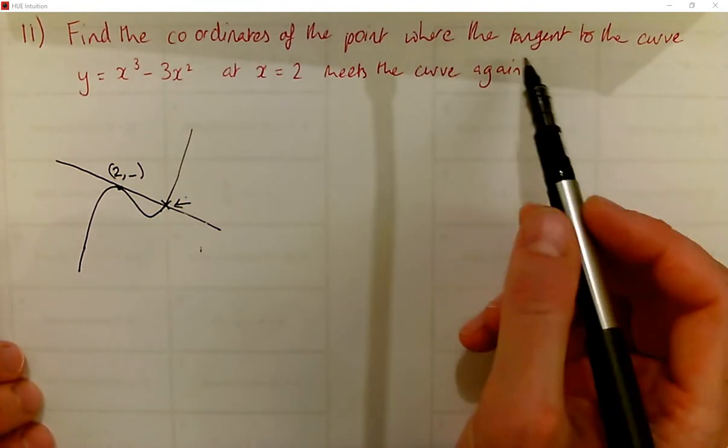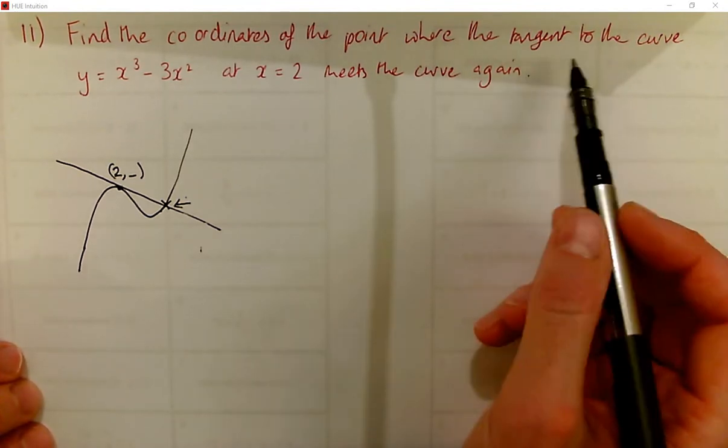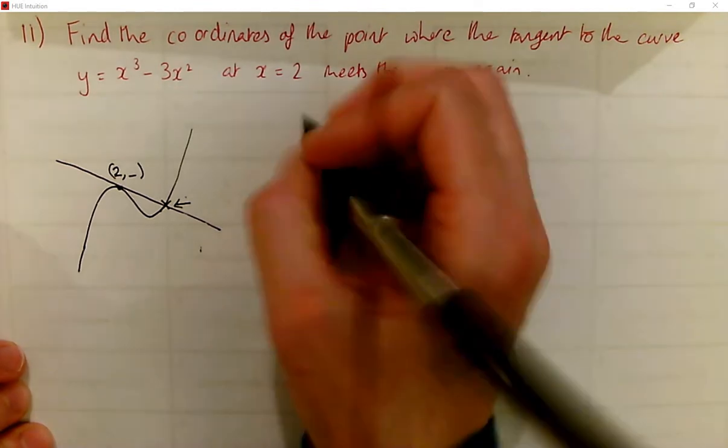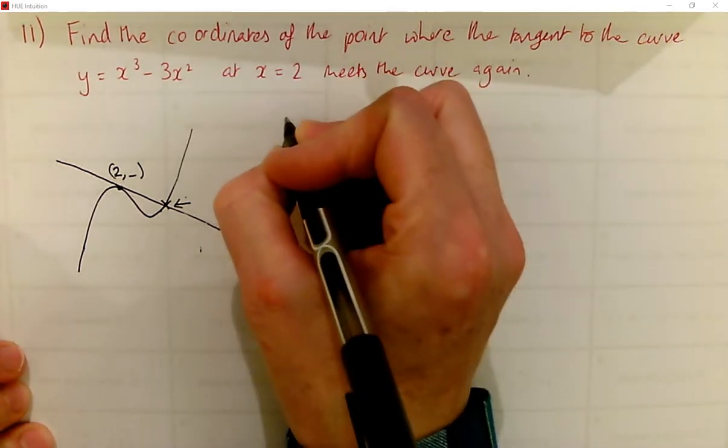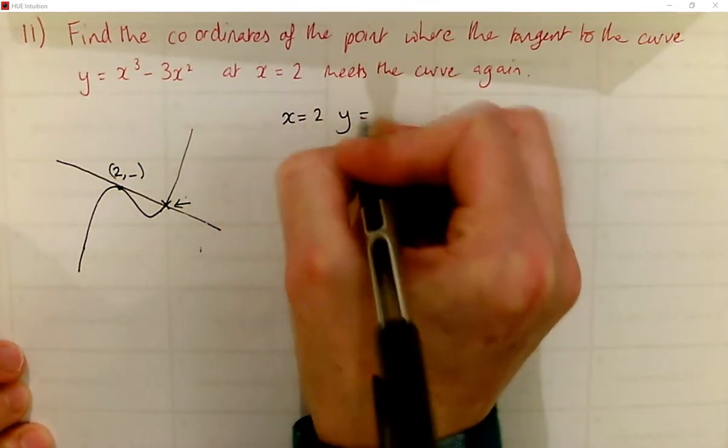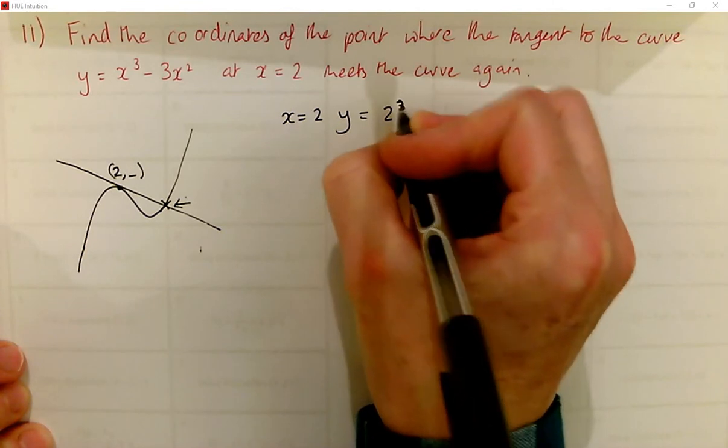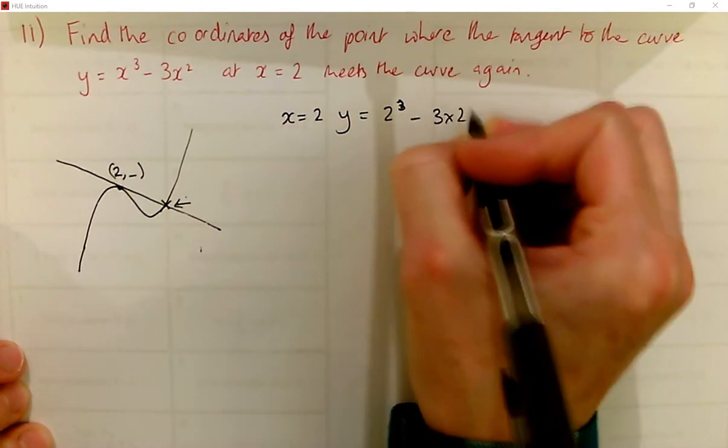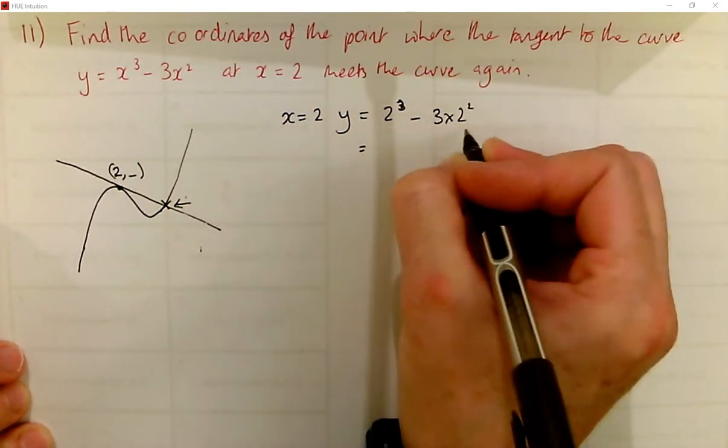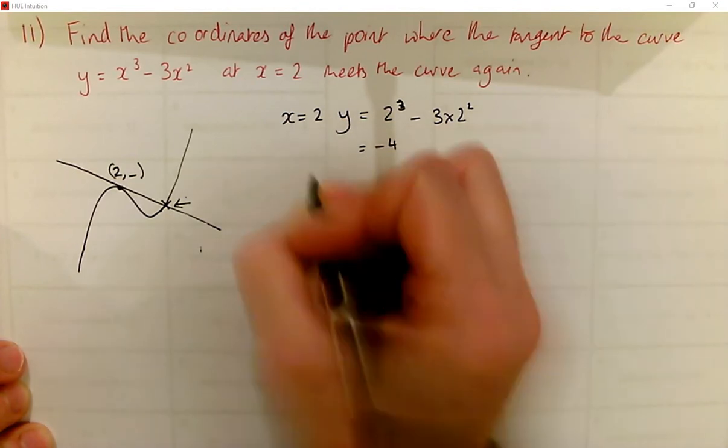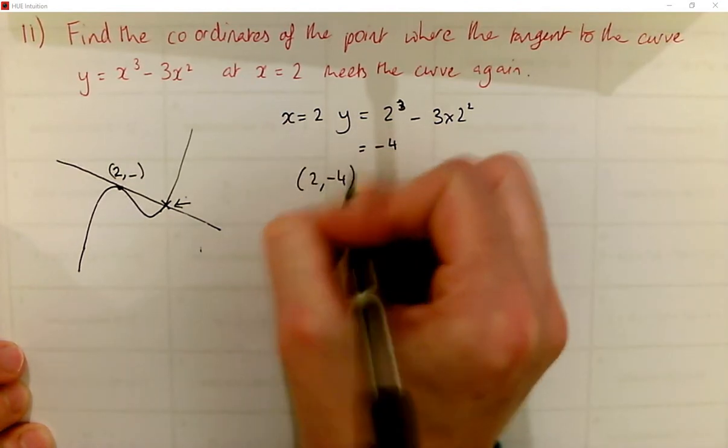So this is straightforward to begin. We just find the equation of the tangent. So we need a point. So at x equals 2, y is going to be 2 cubed minus 3 times 2 squared. So that's 8 take away 12, so negative 4. So 2, negative 4.